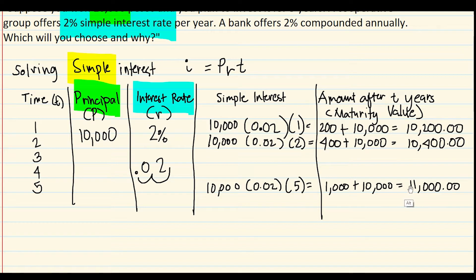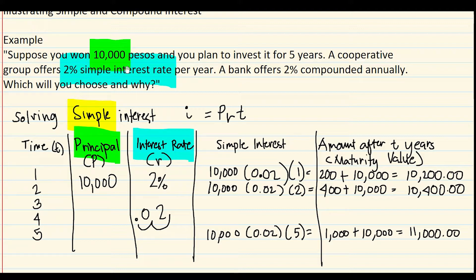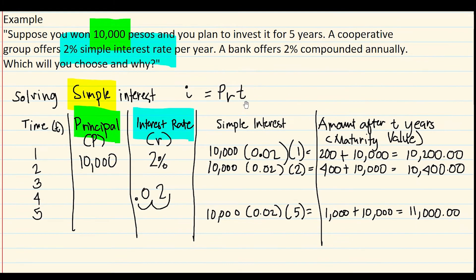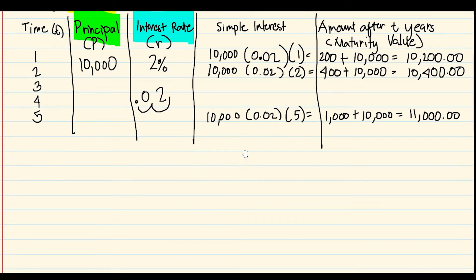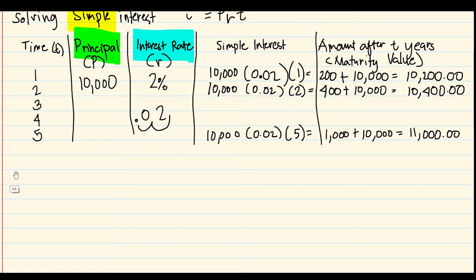So if we deposit our 10,000 pesos in the cooperative group at 2% simple interest per year, after five years we have 11,000 pesos. Now let's solve for the bank's offer: 2% compounded annually.